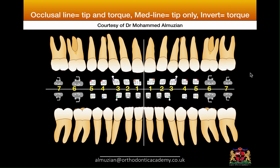In the first scenario, the upper left central bracket is placed on the upper left central tooth, so there is no change in the first, second, or third order bend. In the second scenario, I take the upper left lateral bracket and invert it upside down, which means we get a change in torque only.